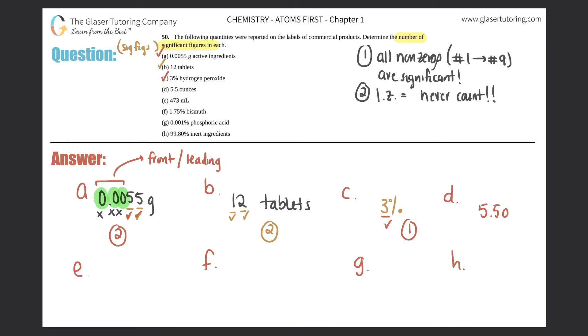D: 5.5 ounces. It's a five and a five, they're both non-zeros so they will count every single time. There's only two numbers here, so you have two sig figs. E: 473 mils. I got three numbers: four, seven, and three. They're all non-zeros, so there would be three sig figs for this one.